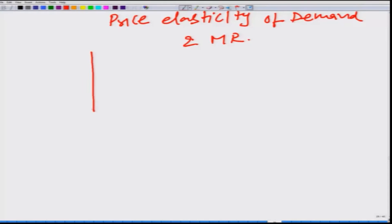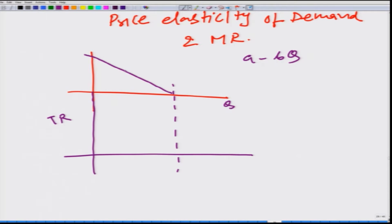If we take a look at simple downward sloping, a linear downward sloping demand function given by A minus BQ, and we have another graph here where we are plotting total revenue. This has to be A and this has to be A by B and this is A by 2B.